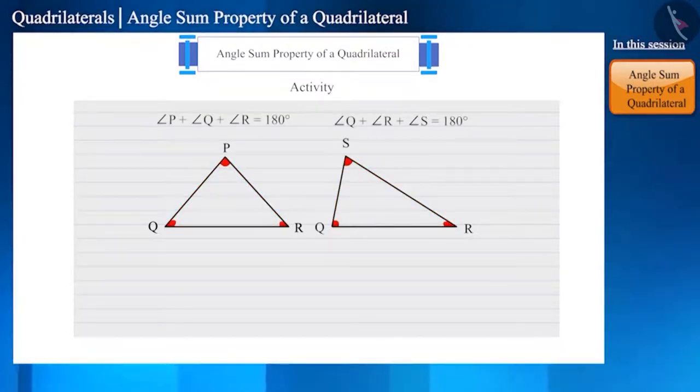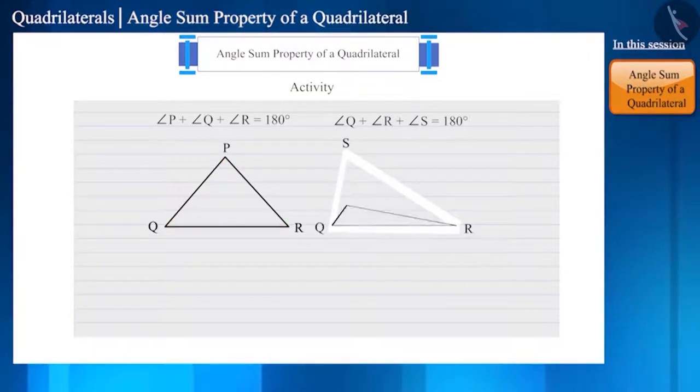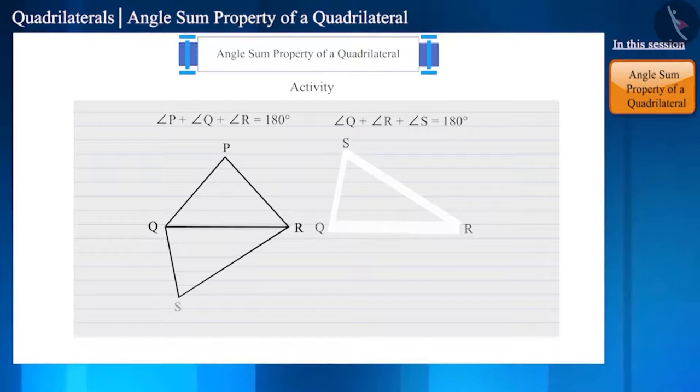Now let's connect these two triangles to the base QR. So the sum of all the angles of this shape so formed will be 360 degrees, and this shape is a quadrilateral.